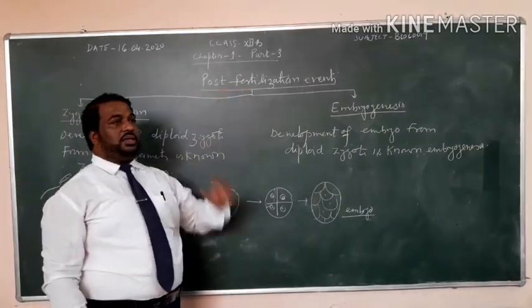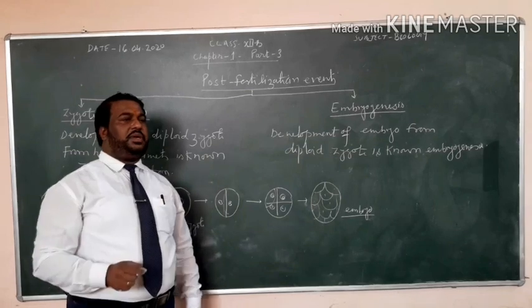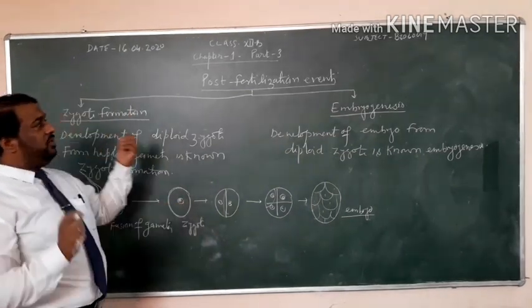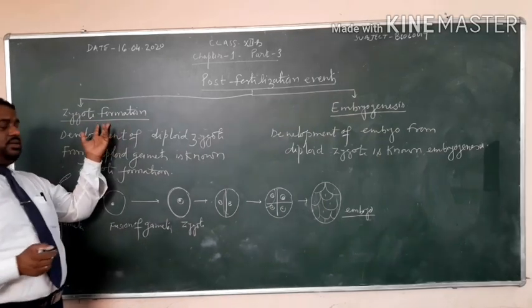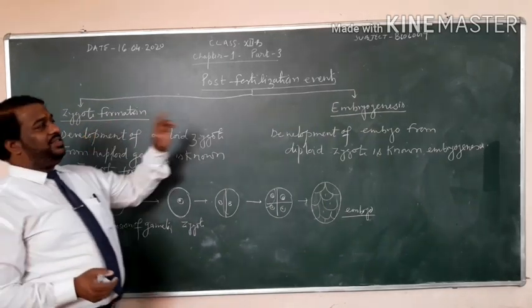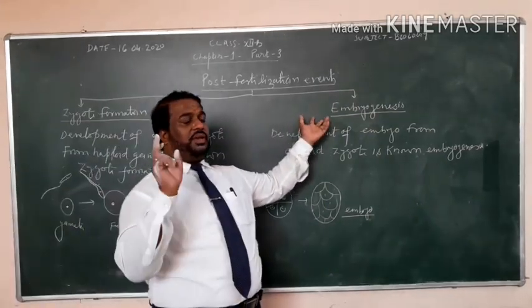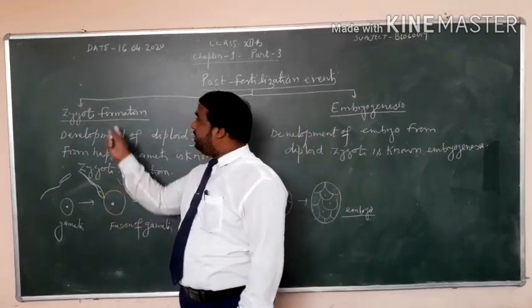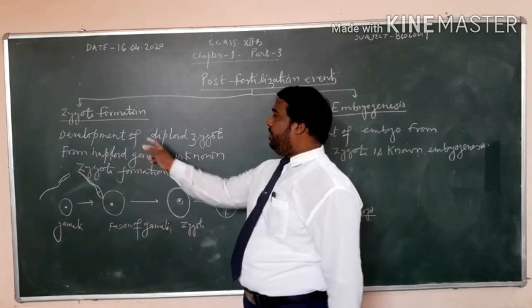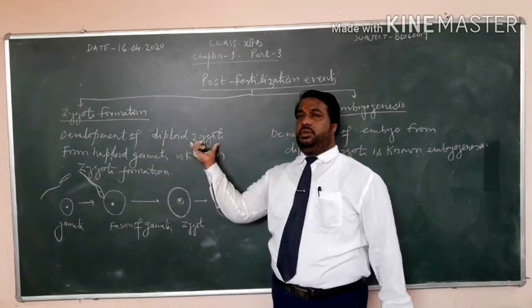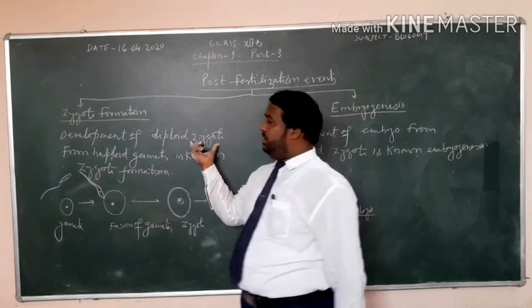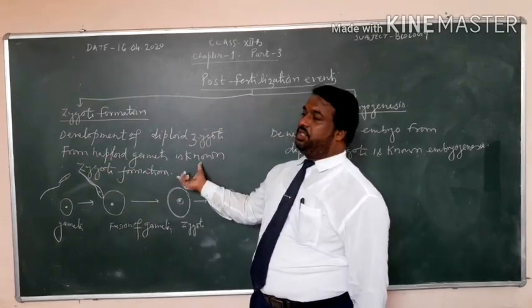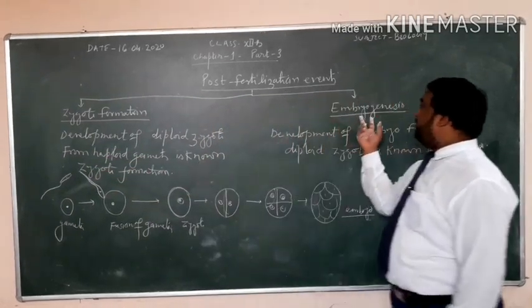Now in post-fertilization events, this is the last part of the sexual reproduction. So in post-fertilization we have zygote formation and second is formation of embryo or embryogenesis. So what will happen in zygote formation? Development of diploid zygote having chromosome number 2n from haploid gametes is known as zygote formation.